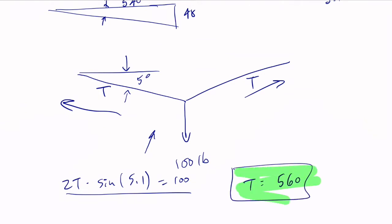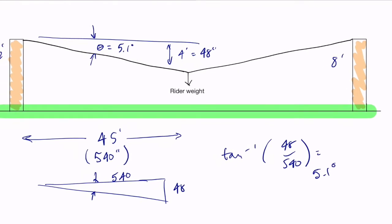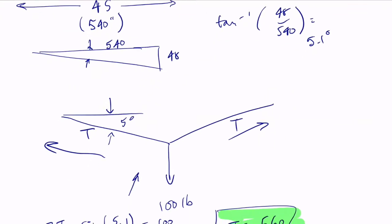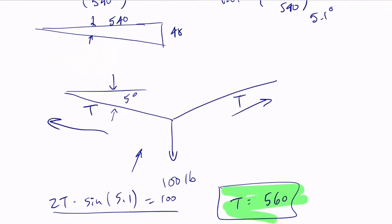That's about how much your 100-pound kid puts in the line if it drops 48 inches over the run. It's going to put about 560 pounds of tension in the line.